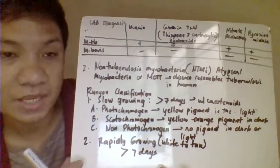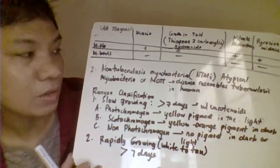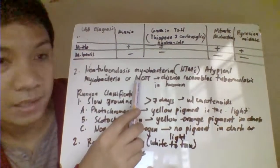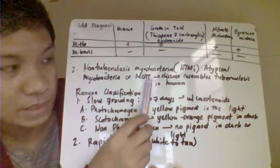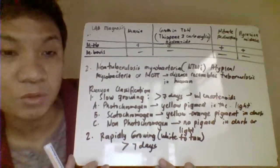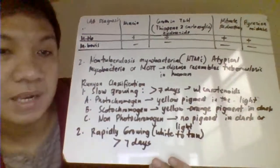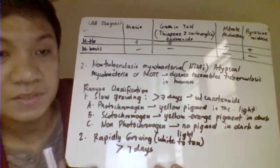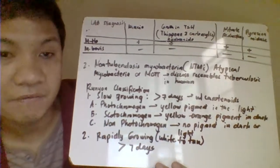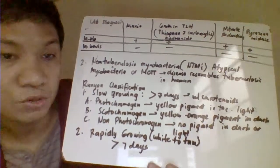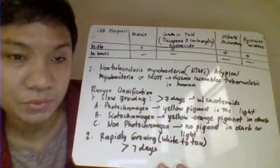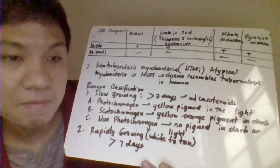Non-tuberculosis mycobacteria (NTM), also called atypical mycobacteria or mycobacteria other than tuberculosis (MOTT), cause diseases resembling tuberculosis. They are differentiated using the Runyon classification, which classifies mycobacteria according to their growth duration and pigment production.